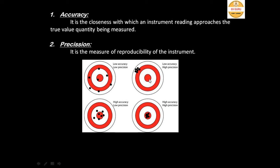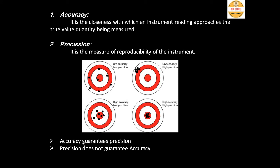In the third diagram, all hits are very near to the target — high accuracy — but there is no reproducibility, so it is low precision. In the fourth diagram, all hits are on the target with reproducibility — that means high accuracy and high precision. So accuracy guarantees precision: if an instrument is accurate every time, it must reproduce the true value. But precision does not guarantee accuracy, as seen in the second diagram.